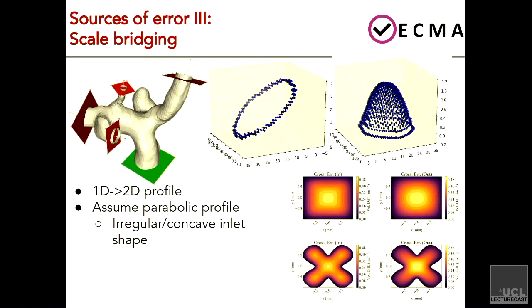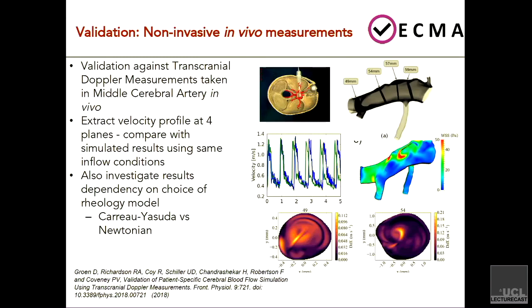And then there's what I'm calling scale bridging: if you've got the 1D profile — the peak velocity at the inlet — you then have to generate a two-dimensional profile at the inlet, and depending on the concavity or irregularity, you're also not capturing, for example, any bends or features upstream. You might not even know if they're there. So these are, off the top of my head, three different sources of error.